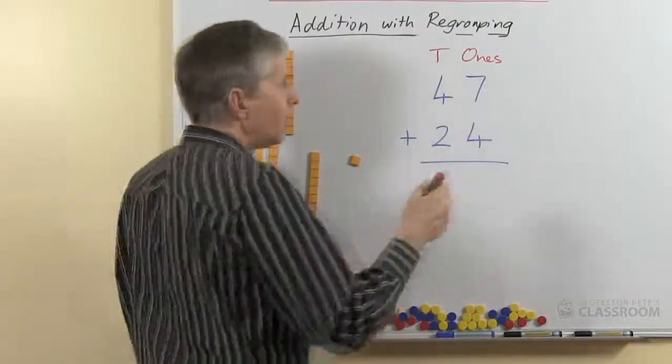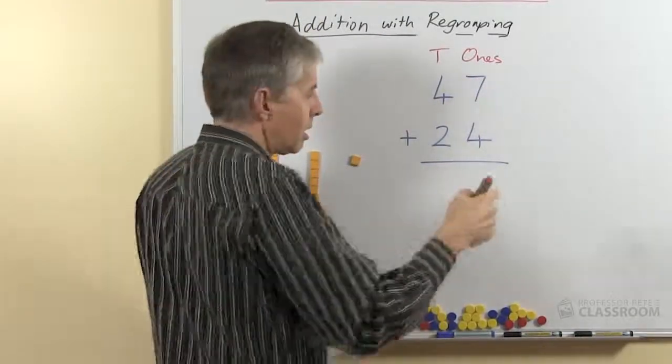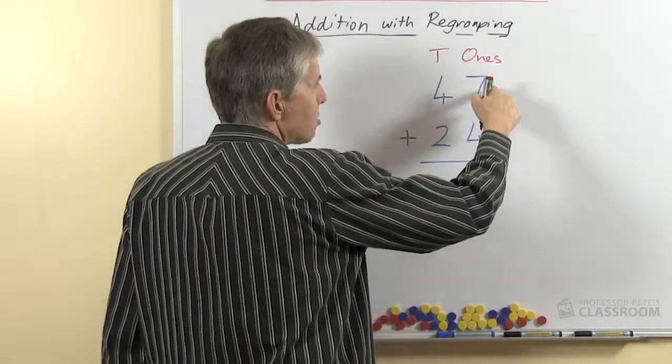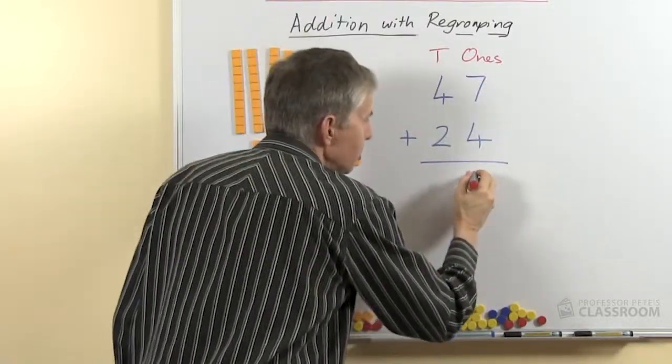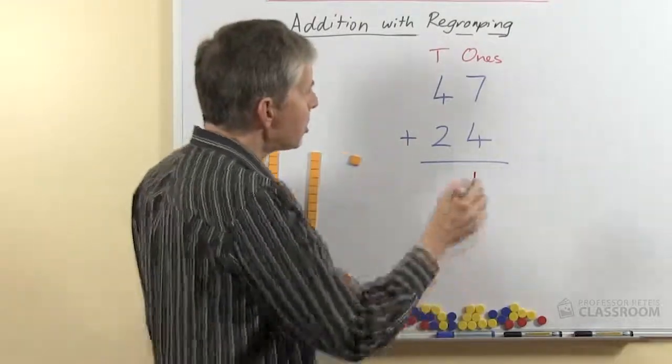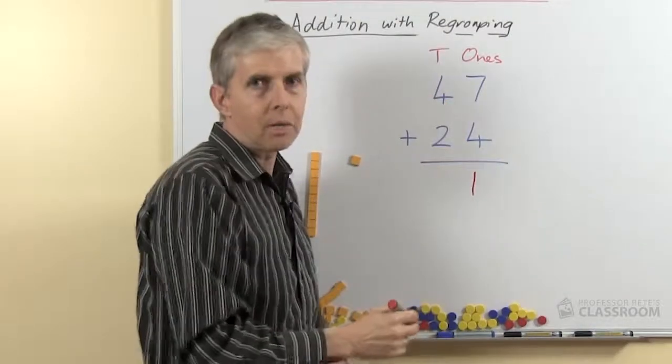When we write that down on the board or on your notebook, we do it this way. 7 and 4 is 11, that makes a 10 and 1, so we put the 1 one there and then we put the 1 ten in the tens place.